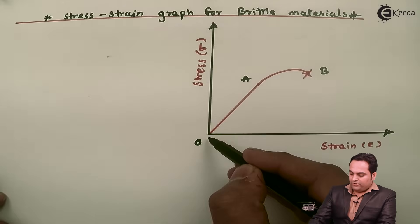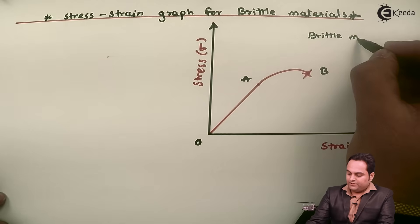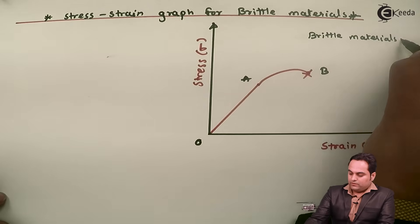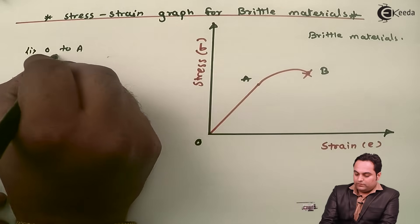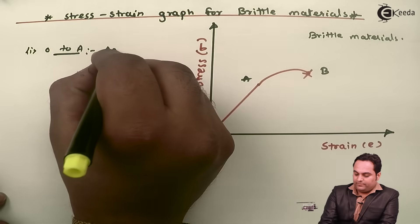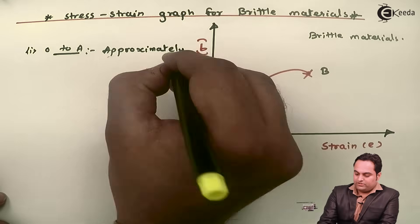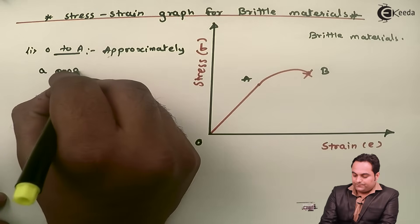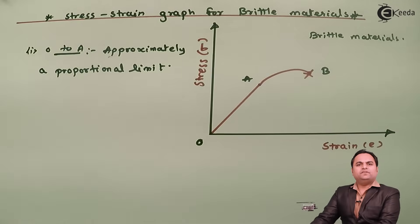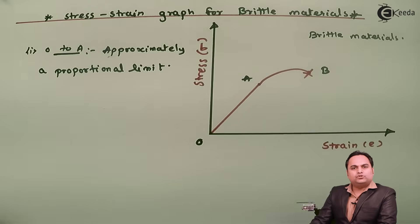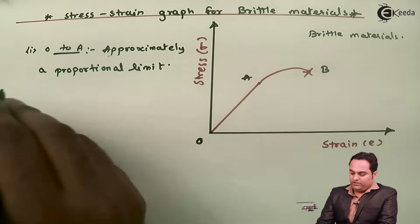The behavior of brittle materials is shown here. From O to A, it is approximately a proportional limit, meaning stress will be directly proportional to strain. However, in brittle materials, the behavior is such that we cannot definitively say stress is directly proportional to strain.